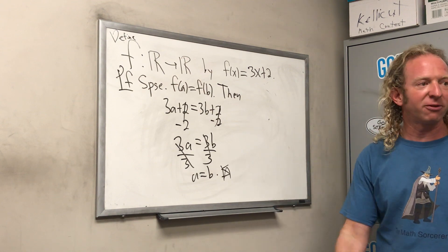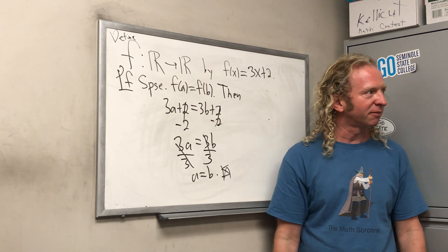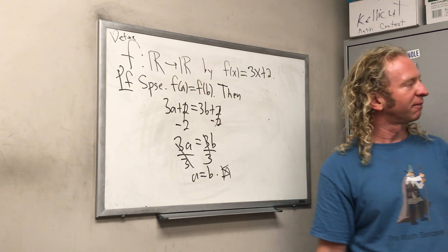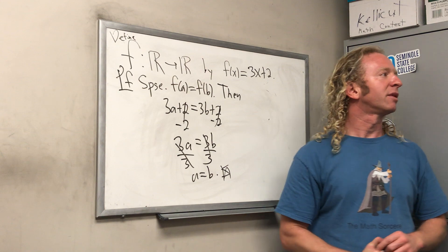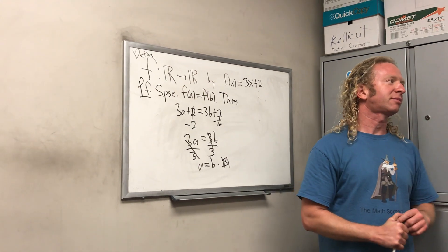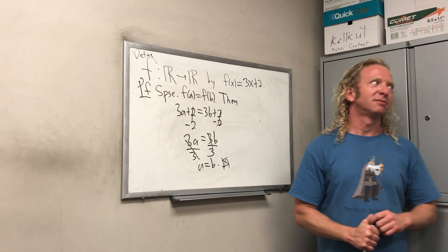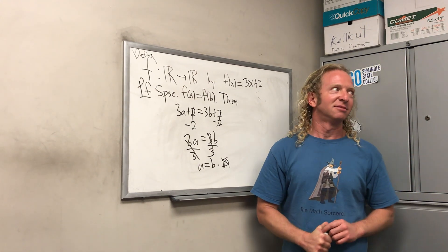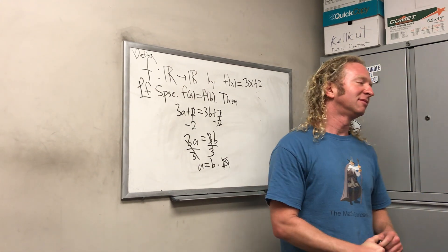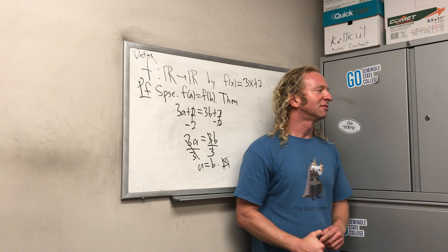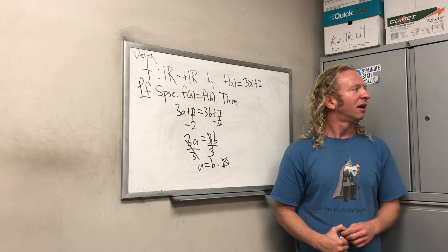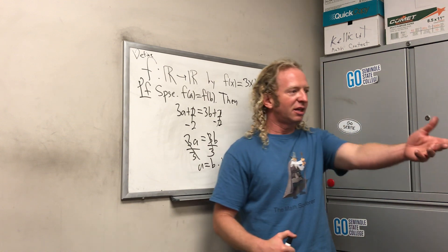It's important to use variables rather than specific numbers in proofs, because putting in a specific number only shows it's true for that value — not necessarily for all values. That's the most common mistake.